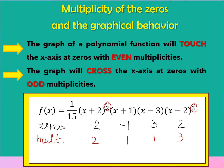Now, what about the behavior of our function? Zero equals negative 2 has even multiplicity, so our graph will touch the x-axis at the x-intercept point x equals negative 2. Zero equals negative 1 has odd multiplicity, so our graph will cross the x-axis at x equals negative 1.